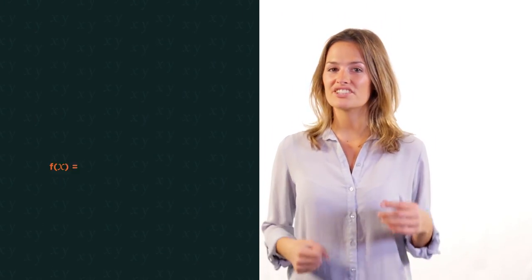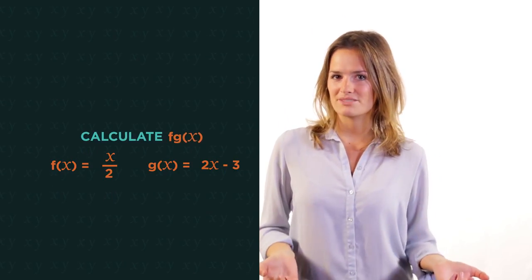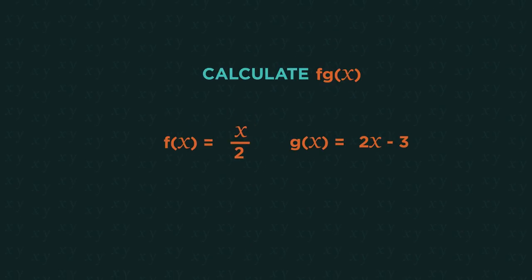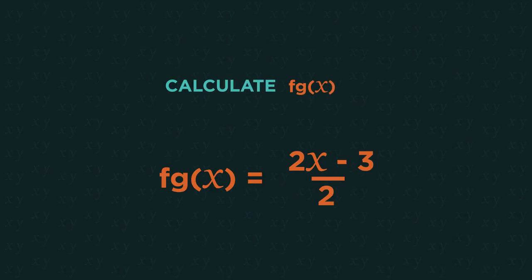We may not always be given a number. The question could just ask us to find f, g of x. So then we've got to do some algebraic substitution. So we just substitute 2x minus 3 into f of x, in place of any x's.